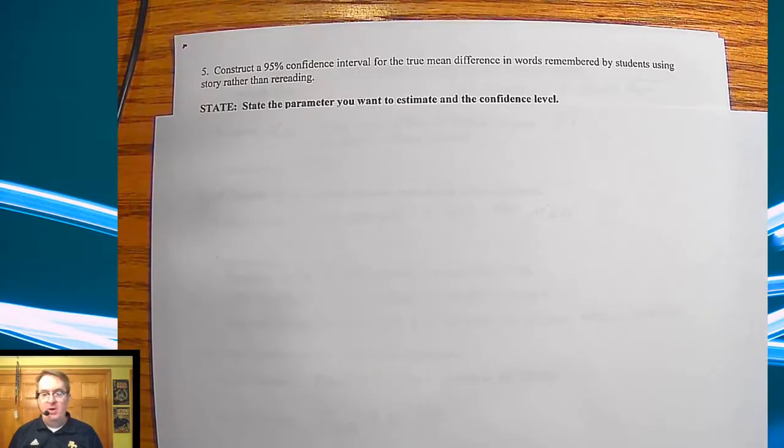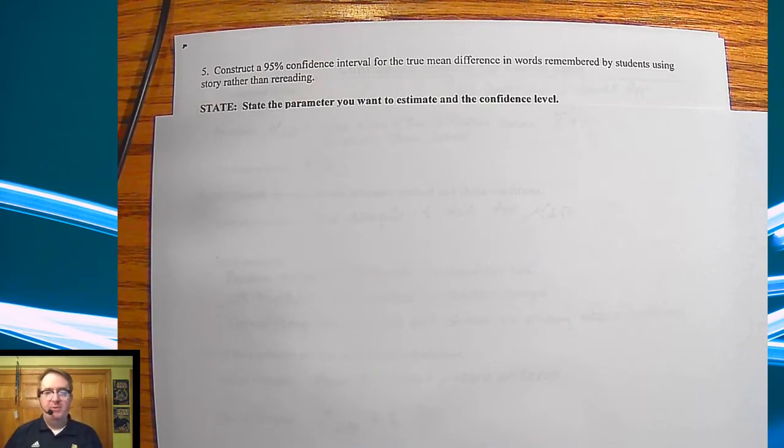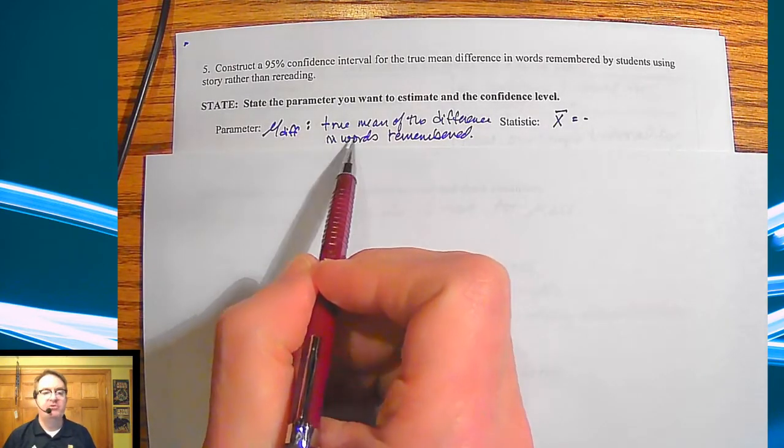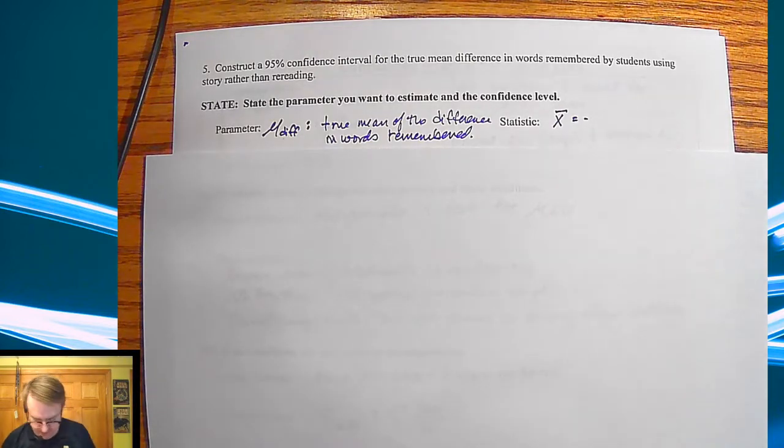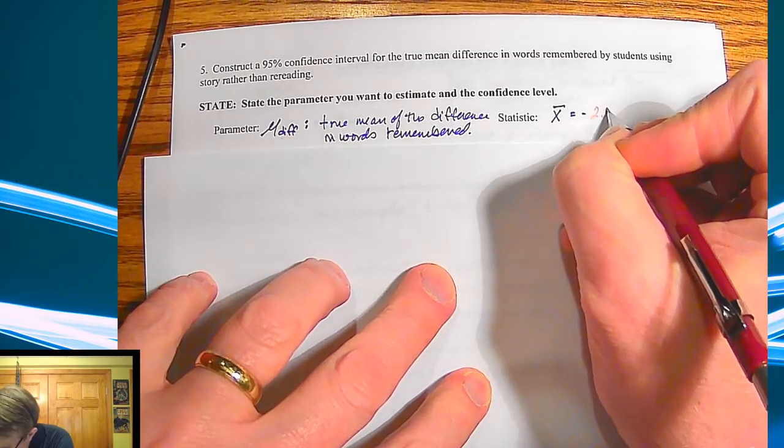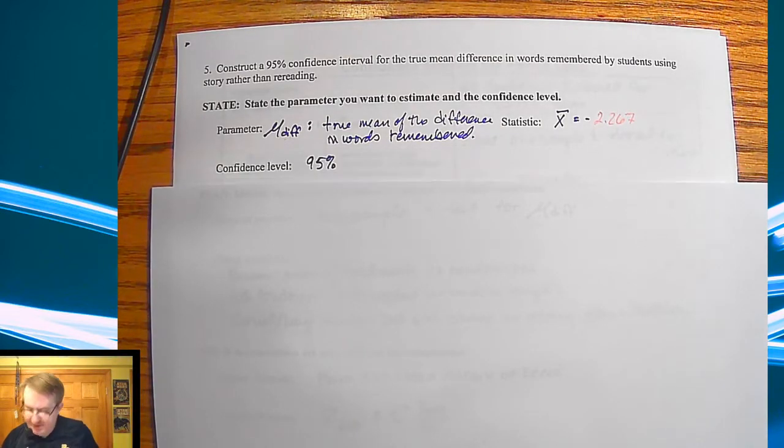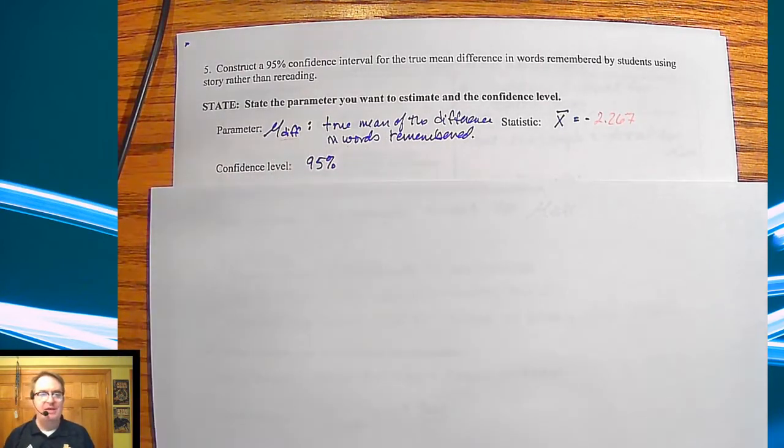All right. So when we have all that, we got to go through and do something with it, right? Let's build a 95% confidence interval. Why not? So here we go. First of all, parameter, we're going to call it mu diff. And that is the true mean of the difference in words remembered. My statistic, I forgot to write down, is negative 2.267. And then confidence level is 95%. Again, nothing really different with the exception of using the fact that we're doing differences here.